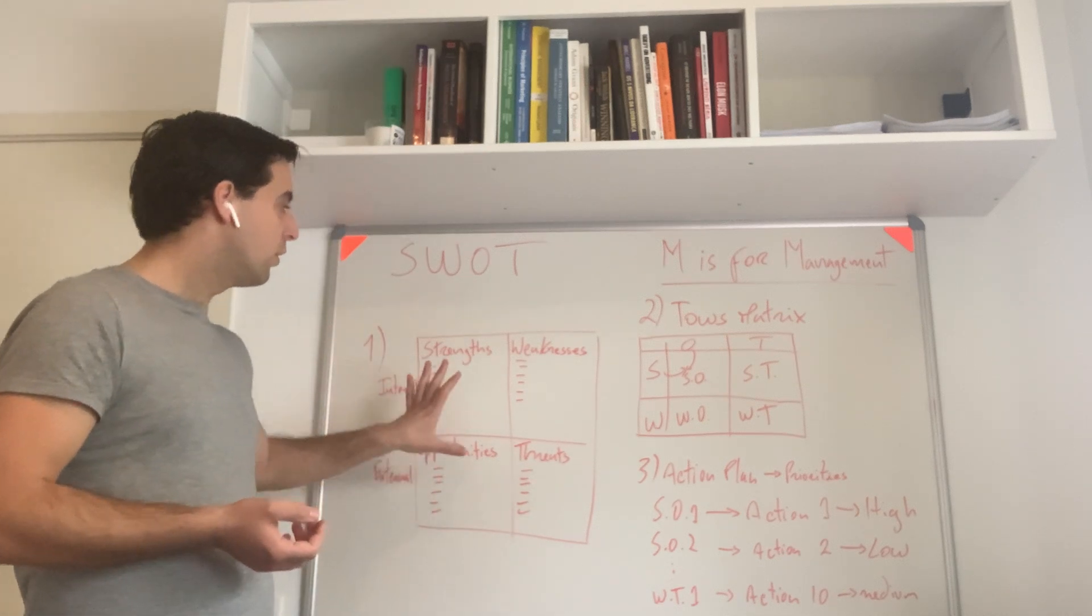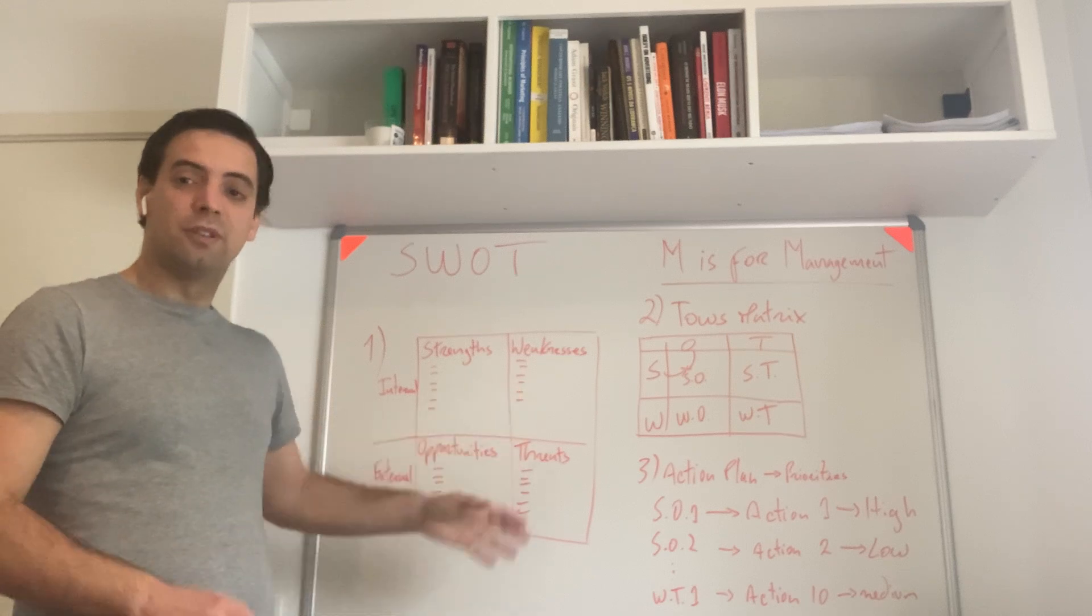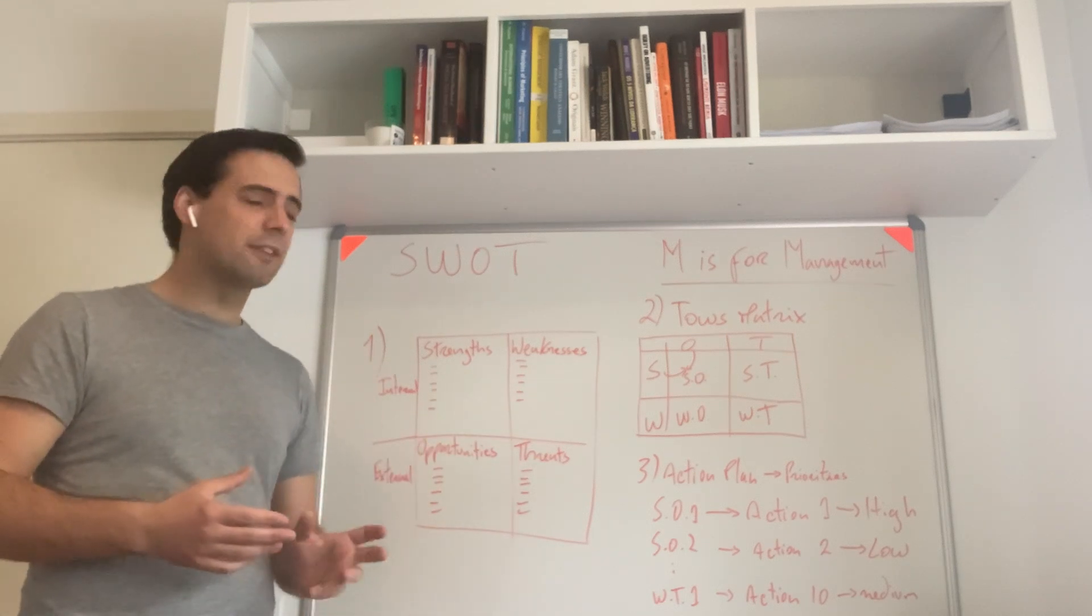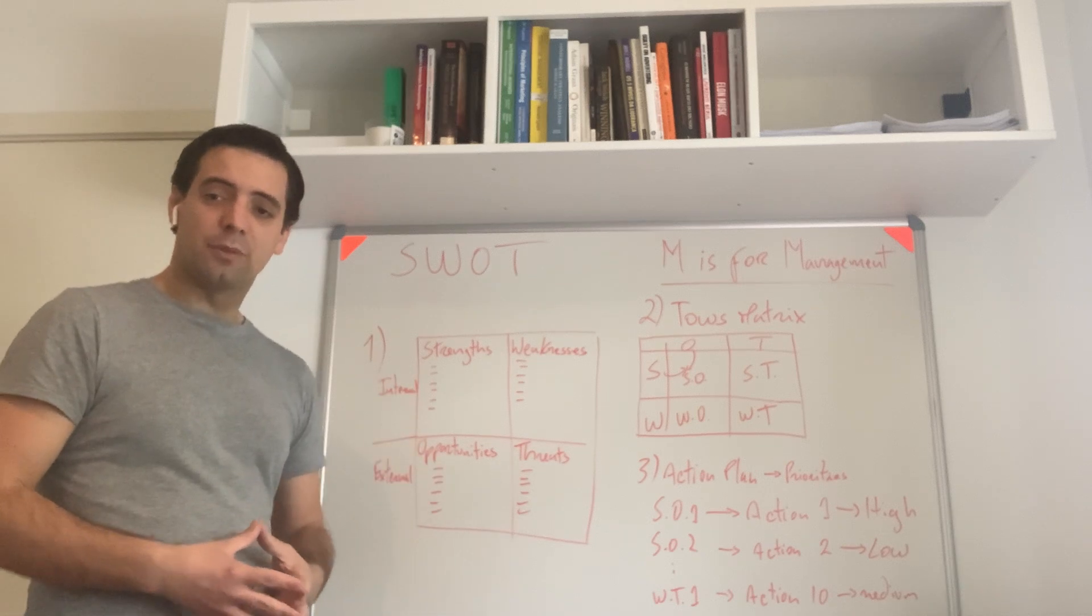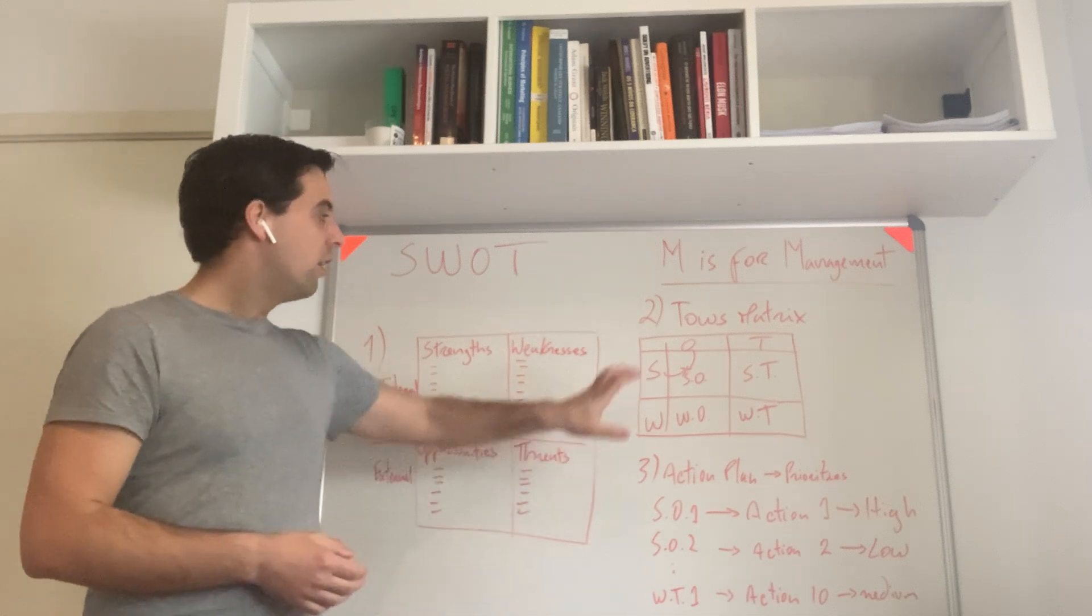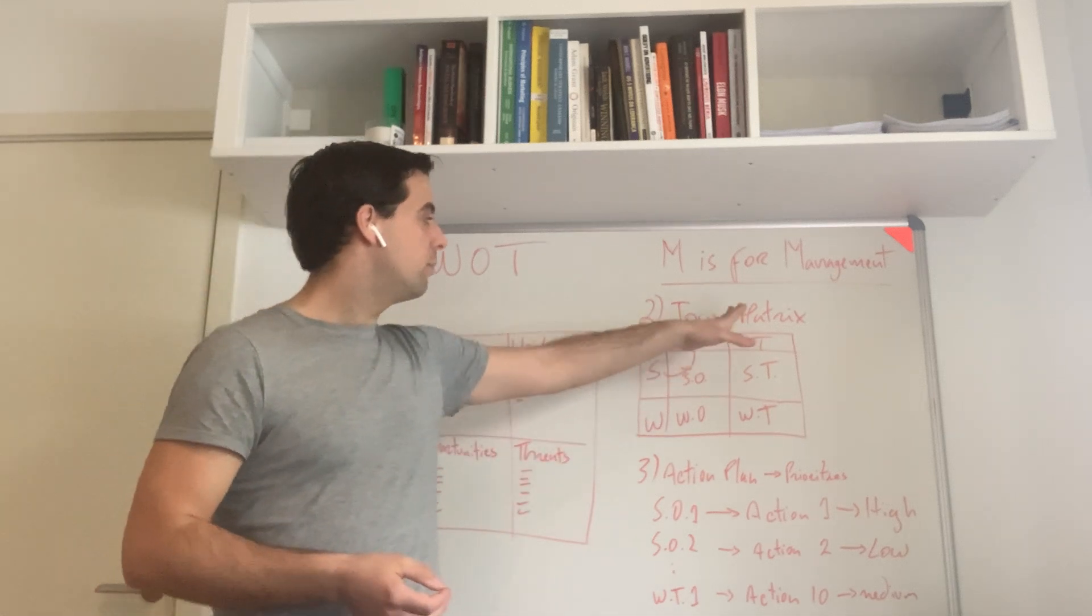Normally people stop here with a broad picture of strengths, weaknesses, opportunities, and threats, and it's done. But I would like to move two steps forward. First step: we go to the TOES matrix.